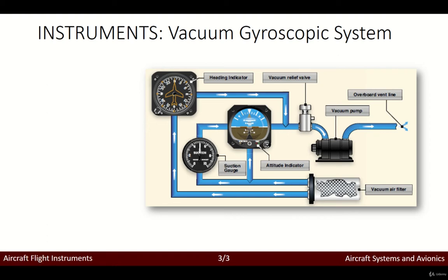The vacuum or pressure system spins the gyro by drawing a stream of air against the rotor vanes, much like the operation of a water wheel or turbine. The amount of vacuum or pressure required for instrument operation varies, but is usually between 4.5 and 5.5 inches of mercury.